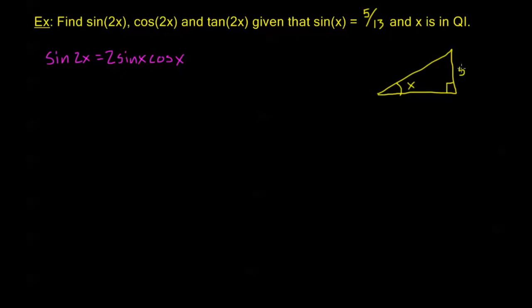Sine is given as 5 thirteenths, and this is our 5, 12, 13 triangle. My adjacent is going to be 12. If you don't see that right away, this is the square root of 13 squared minus 5 squared. But this is one of those special triangles, just like a 3, 4, 5 triangle. It's in the proportion 5, 12, 13.